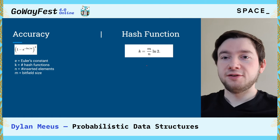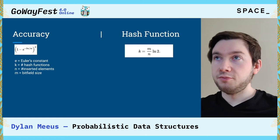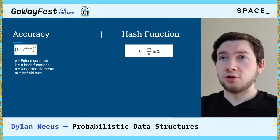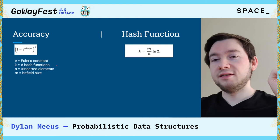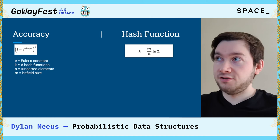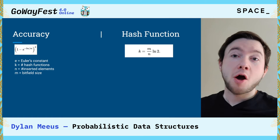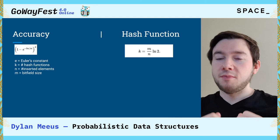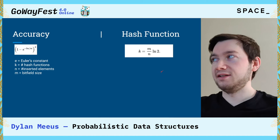A small side note: these things are not guesswork. If you want to know the accuracy of your bloom filter, you can use a formula where e is a constant, k is the number of hash functions, n is the amount of elements inserted, and m is the size of the bit field. Likewise, you don't have to guess how many hash functions you need — assuming you know the bit field size and how many elements will be inserted, you can figure out the optimal number of hash functions. It's not trial and error; you can just plug it into these formulas.